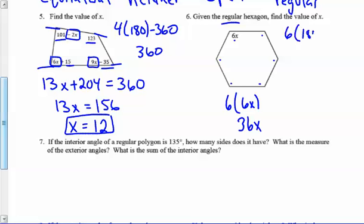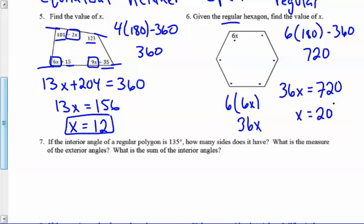Well I have 6 linear pairs, take away my exterior angles, and that would give me 720. So my interior angles add up to 36x, and that should equal 720. That means x is 20.